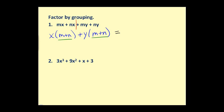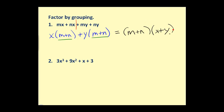Therefore, we can factor m plus n out of those products, and we're left with x plus y. This is factoring by grouping.